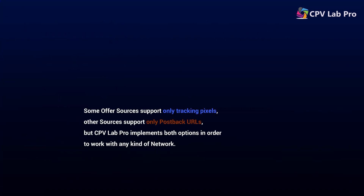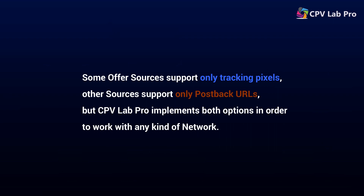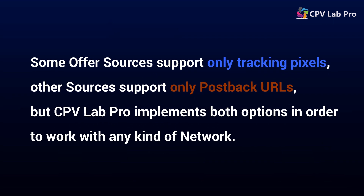Both the tracking pixel and the postback URL are methods to track conversions in CPV Lab Pro. They are the way your affiliate or CPA network tells CPV Lab Pro that one of your visitors purchased the offer and that you gained revenue. Some offer sources support only tracking pixels, others support only postback URLs, but CPV Lab Pro implements both options in order to work with any kind of network.